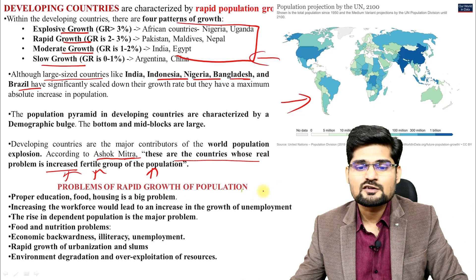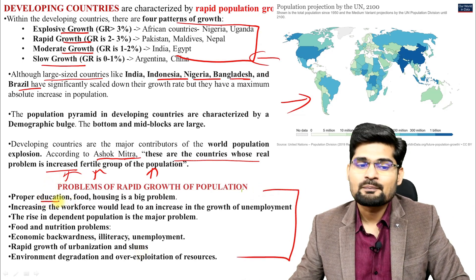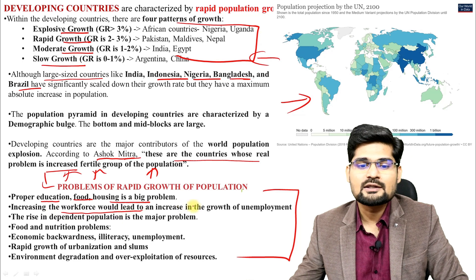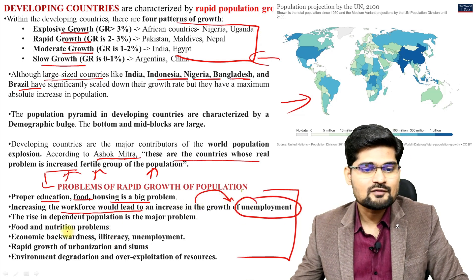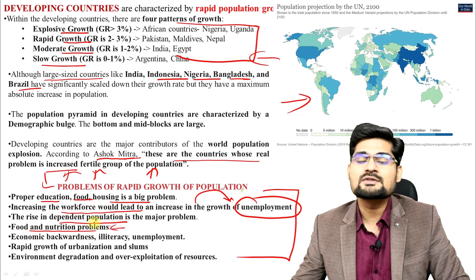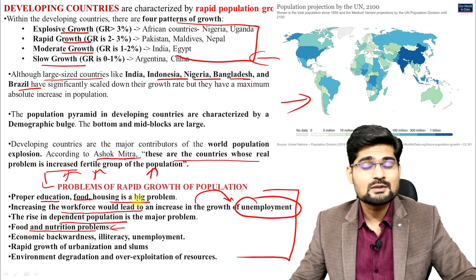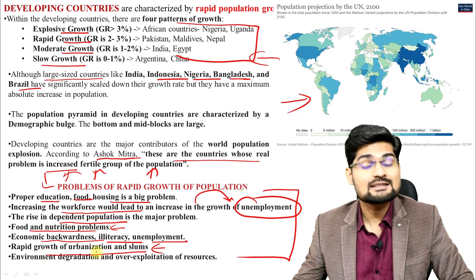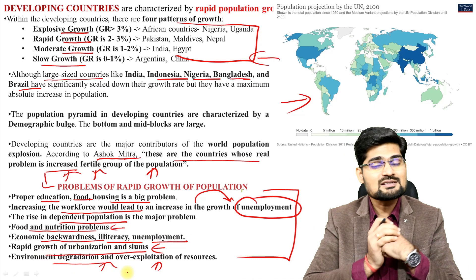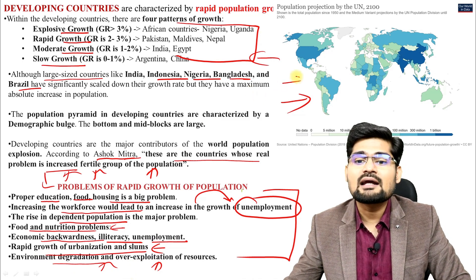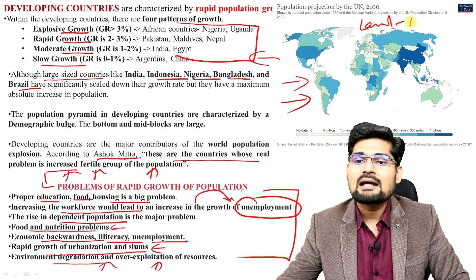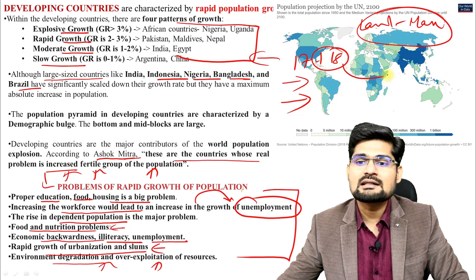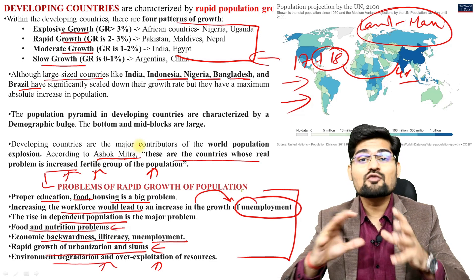Problems of rapid population growth in developing countries include: problems in education, food, and housing; increasing workforce leading to growth of unemployment; rise of dependent population; food and nutrition security as a big challenge — also mentioned in sustainable development goals; economic backwardness; illiteracy; unemployment; rapid growth of urbanization and slums alongside; and environmental degradation and over-exploitation of resources. Remember the land-man ratio: if 17 to 18 percent of the people are concentrated on just 4 percent of world land, that is a critical ratio.